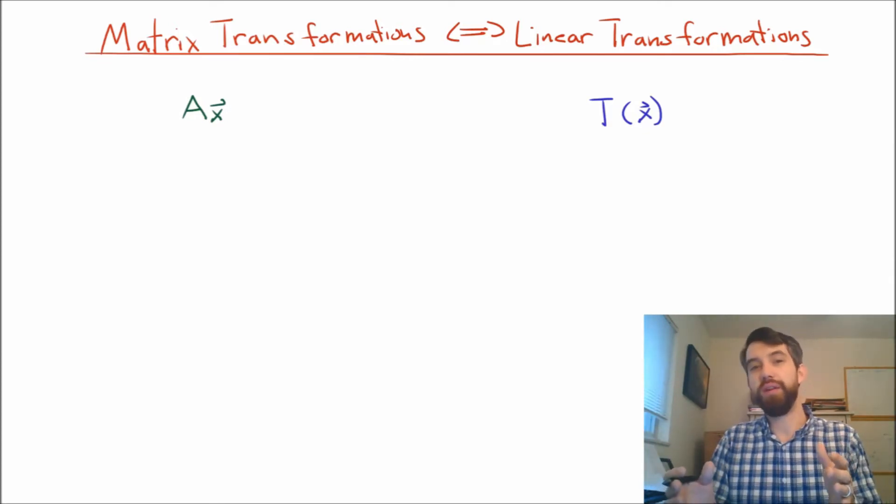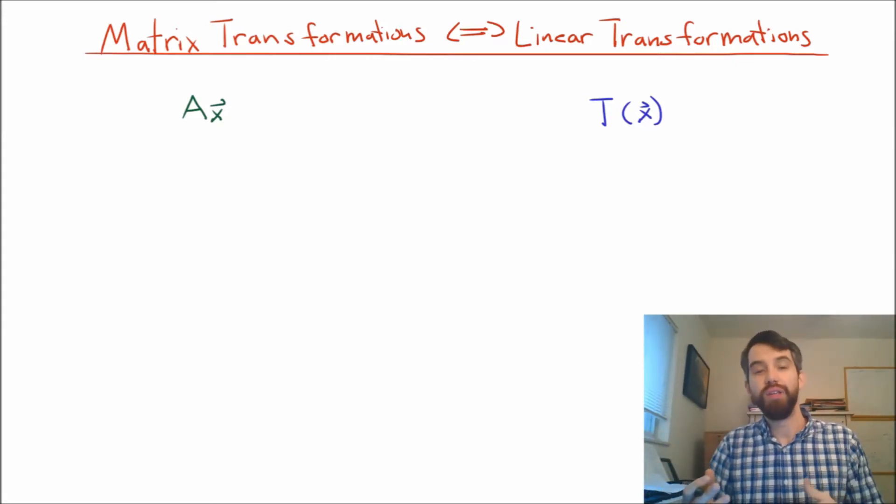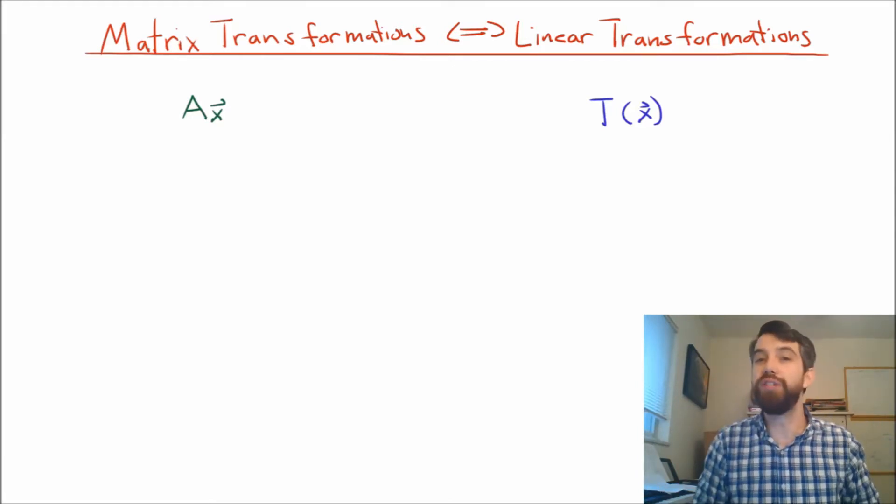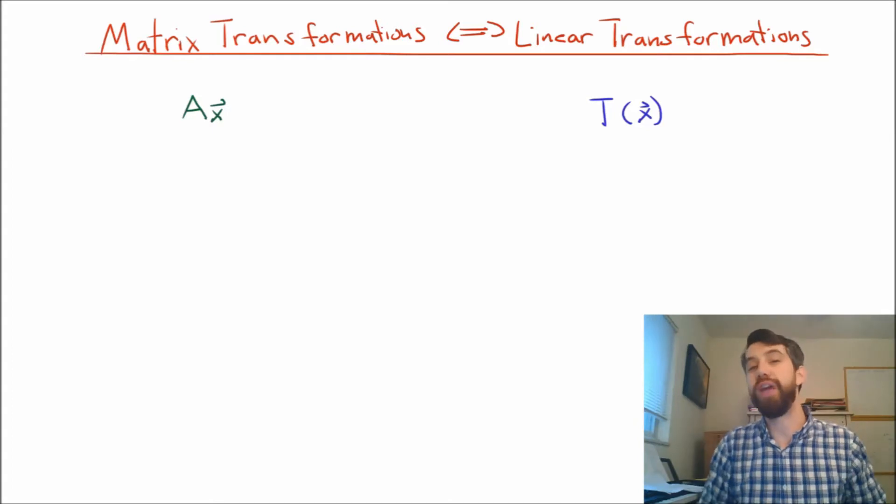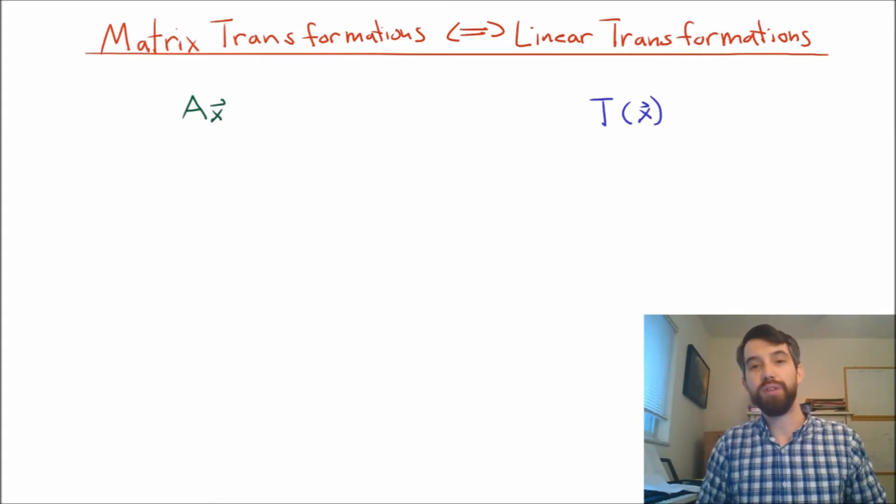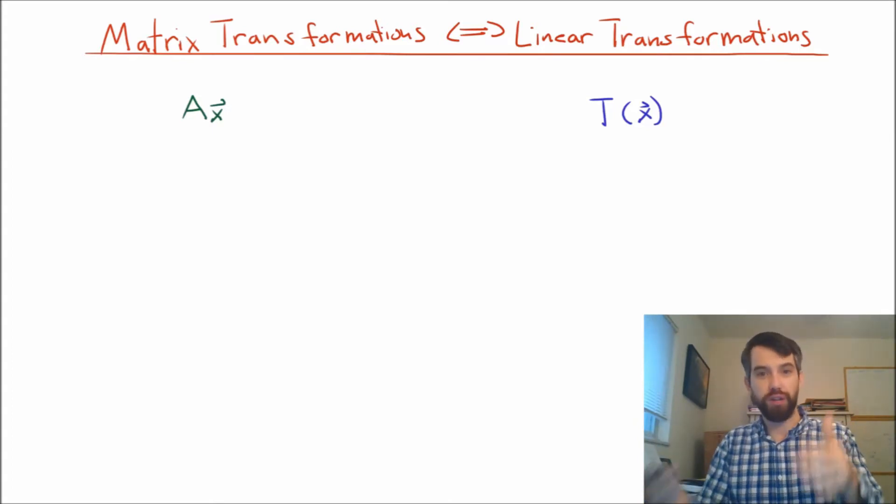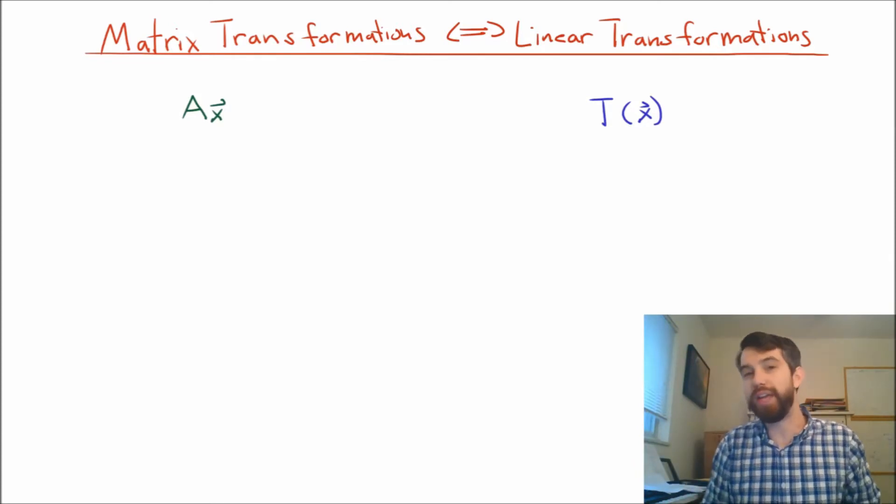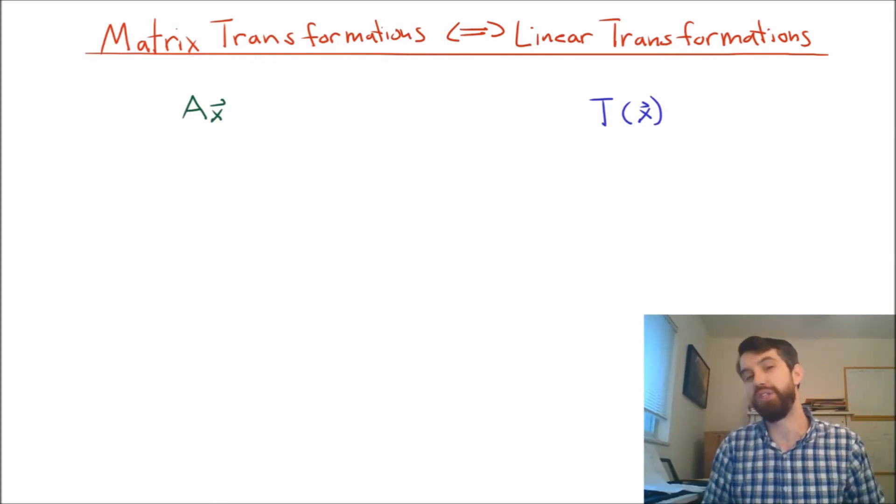So let's focus first on matrix transformations. And this is where you have some vector x living in Rn, you apply a matrix to it, which does some algebraic operation, and you spit out of it a vector in Rm. Now certainly this is a transformation. It goes from Rn to Rm, and it has this particular property that it is expressed by multiplication by a matrix.